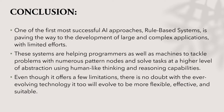Here comes the conclusion of the rule-based system. We have learned about what is rule-based system, how does a rule-based system work, what are its features, advantages, disadvantages, and its basic architecture. One of the first successful AI approaches, rule-based system is paving the way to the development of large and complex applications with limited efforts. These systems are helping programmers as well as machines to tackle problems with numerous pattern nodes and solve tasks at a higher level of abstraction using human-like thinking and reasoning capabilities.